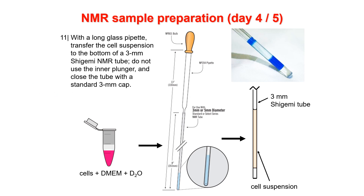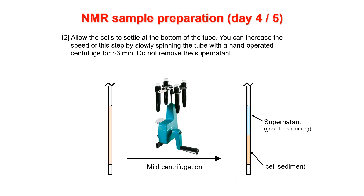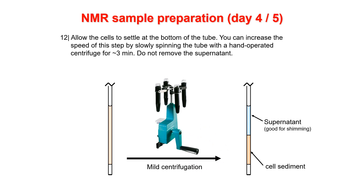The next step is to make a soft cell pellet at the bottom of the tube. This would happen anyway since the cells do not stay afloat and settle down by themselves in a few minutes, but we speed it up by spinning the tube slowly with a hand-operated centrifuge — very classic for spinning down NMR samples. In about three minutes you get a nice cell sediment with the supernatant at the top of the tube. That is why we don't use the plunger: the supernatant acts as a plunger. The pellet stays exactly where the NMR coil is in the instrument, minimizing the cell volume needed.